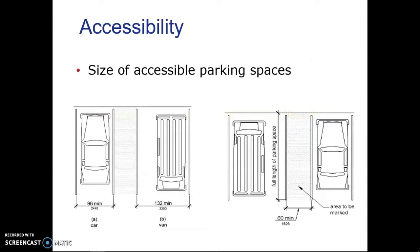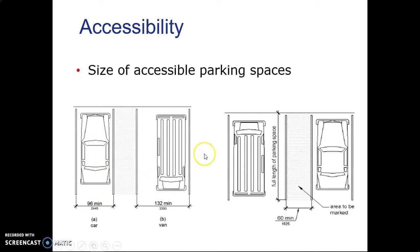The size of an accessible parking stall is larger than a standard stall because it needs to accommodate van accessibility. One option is eight feet wide with a five-foot access aisle, making the combined width approximately 13 feet. The key point is that handicapped or accessible spaces are larger than regular stalls overall.